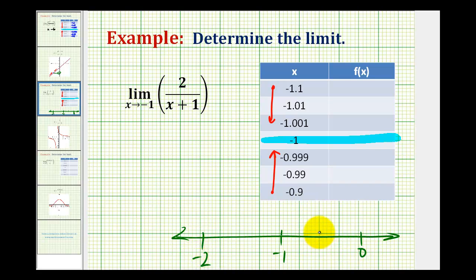In between 0 and negative 1 would be negative 0.5, and over here we'd have negative 1.5. So somewhere in here we have negative 0.9, and somewhere here we have negative 1.1. So negative 0.9 is greater than negative 1, so these values are greater than negative 1 approaching from the right, and then negative 1.1 is less than negative 1, so these values are less than negative 1 approaching from the left.